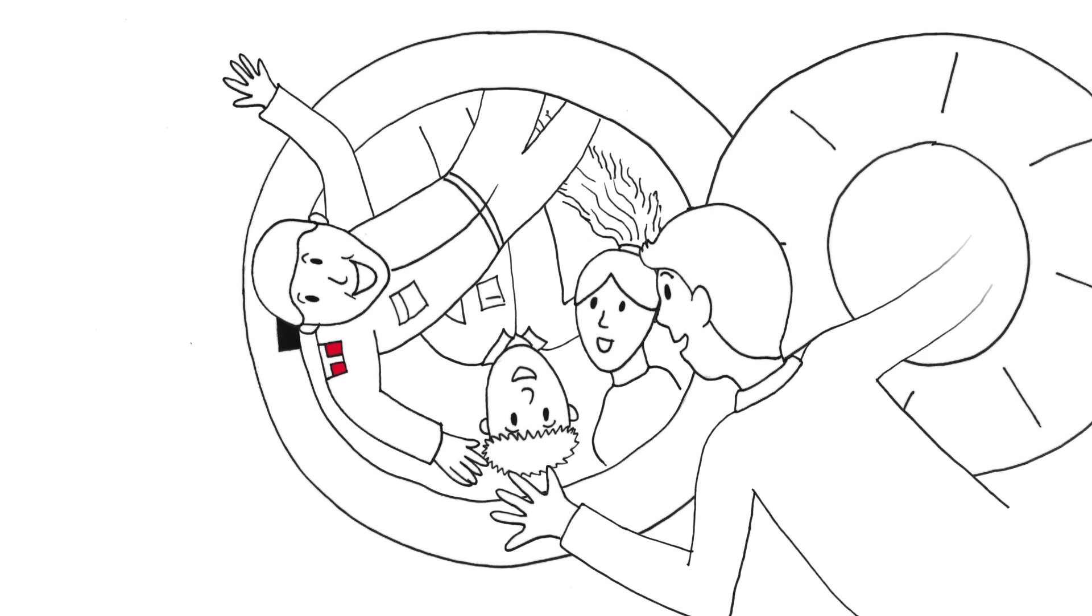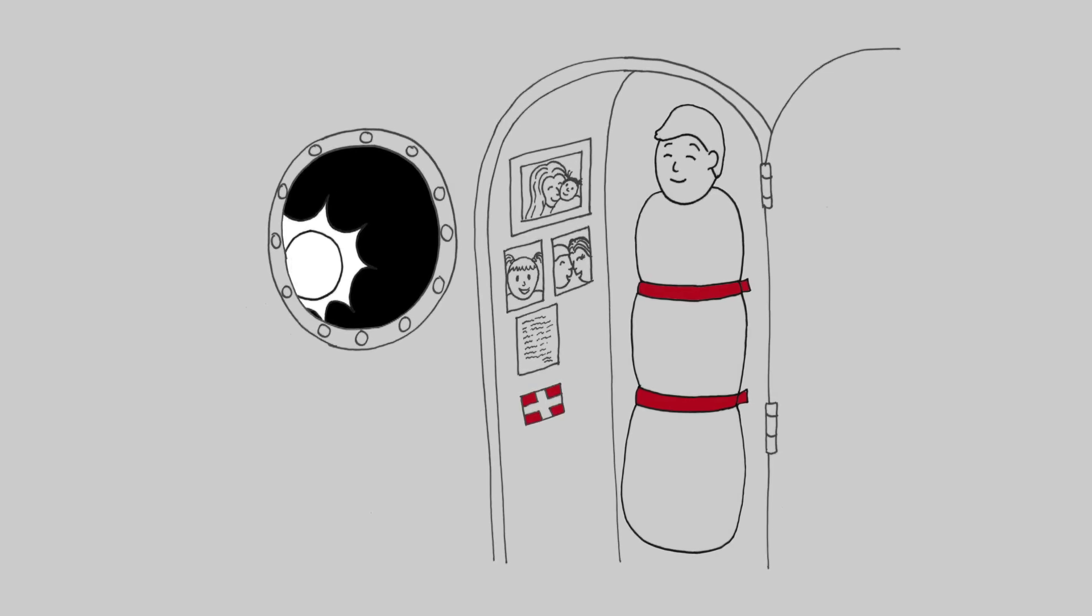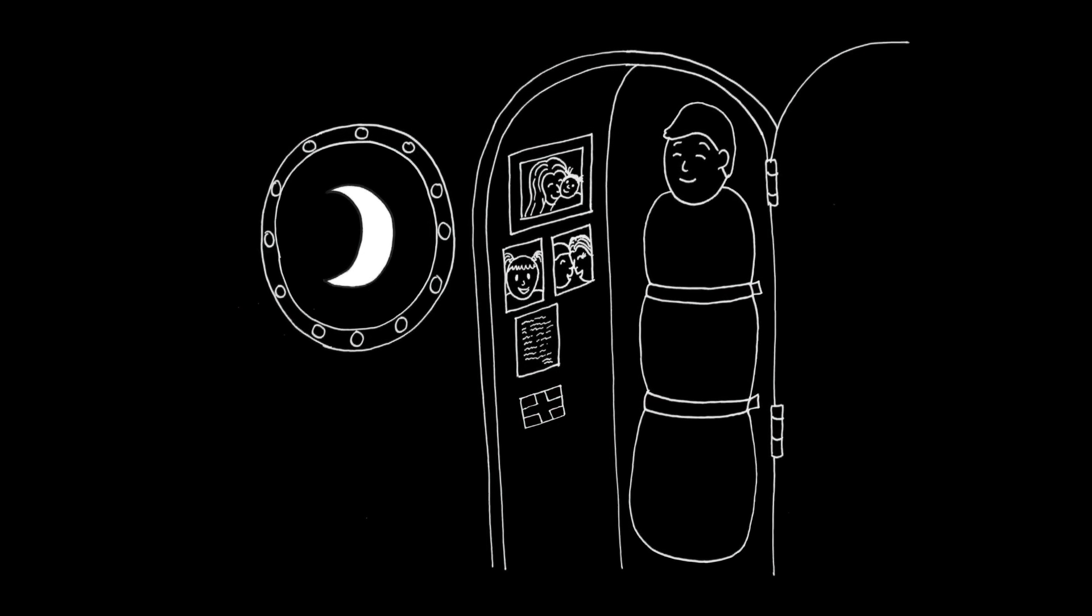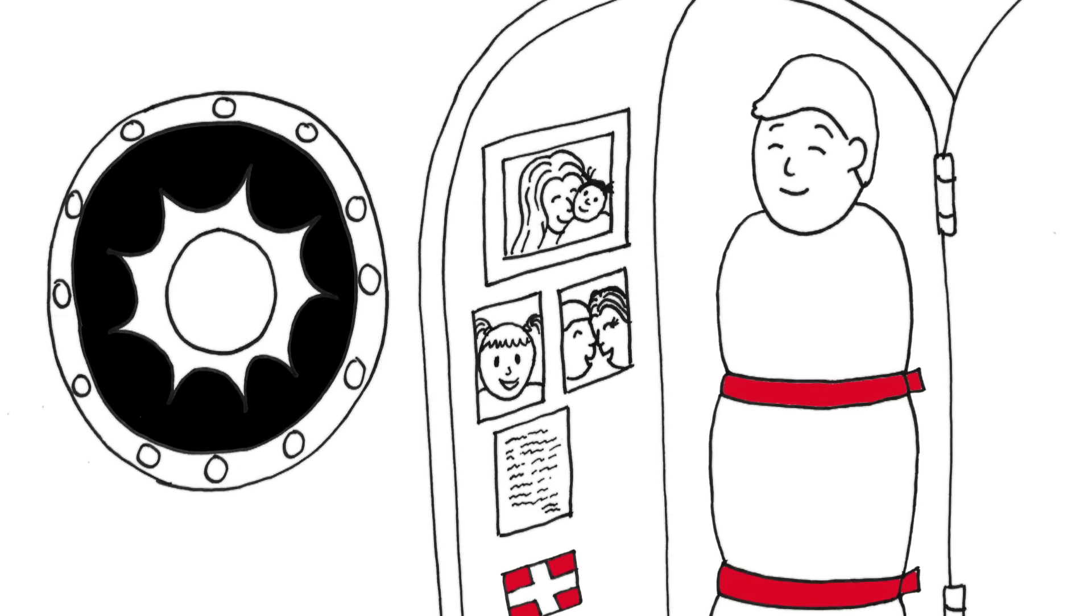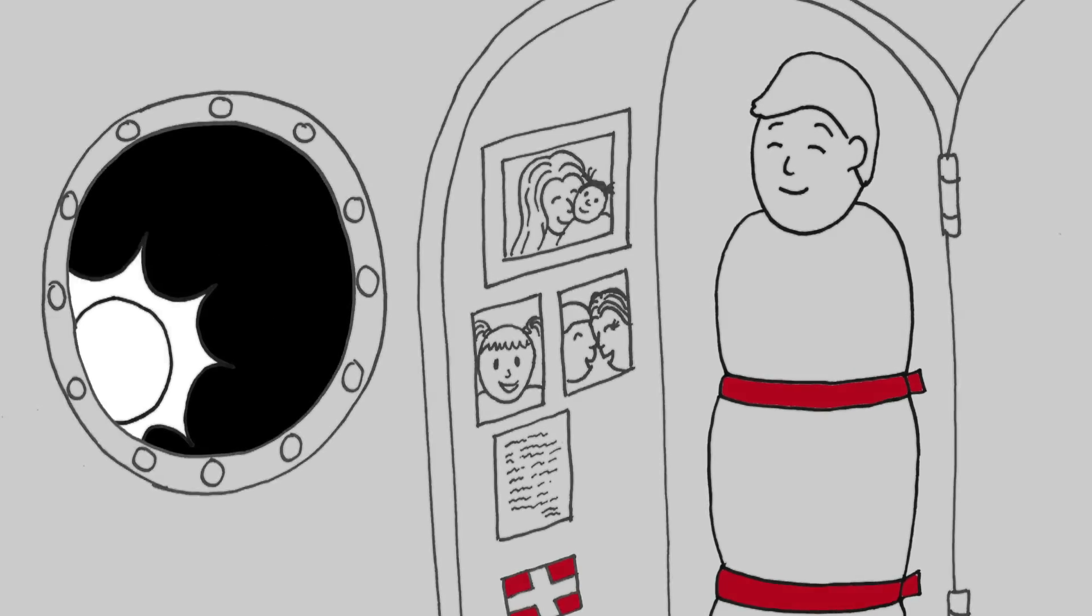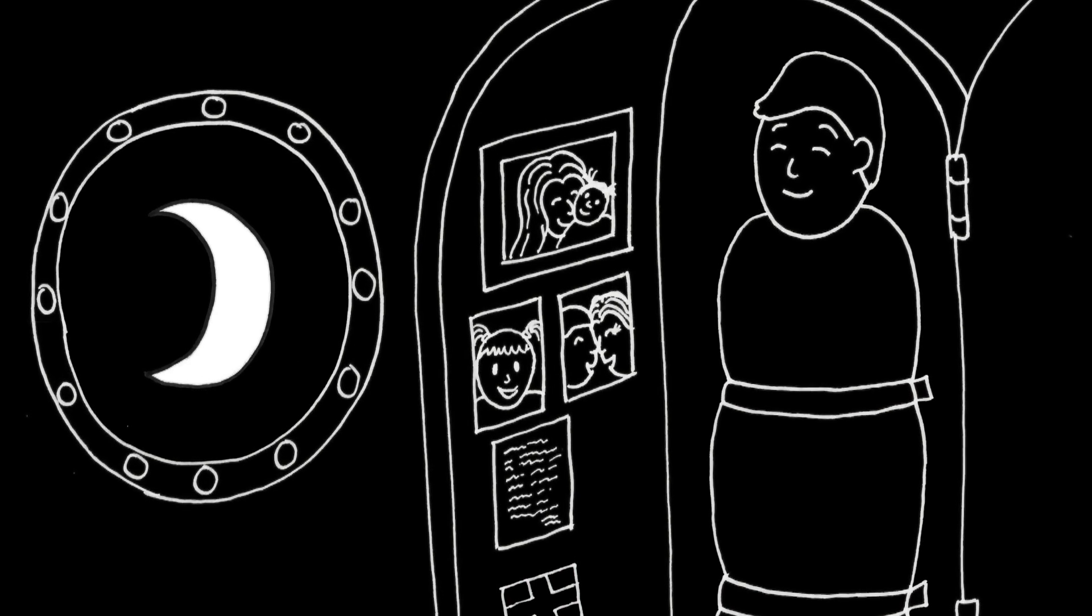We are now weightless in space. In weightlessness, daily life is rather different. We don't need a bed to sleep in, and there is no up or down. We also get to see 16 sunrises and 16 sunsets every day while we circle the Earth at great speeds.